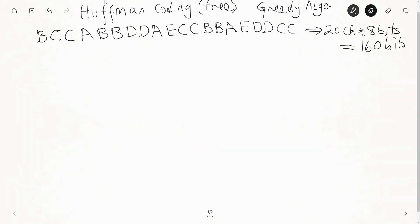This lecture is about Huffman coding, where we build the Huffman tree. It is a compression algorithm that takes characters and performs major compression on them.